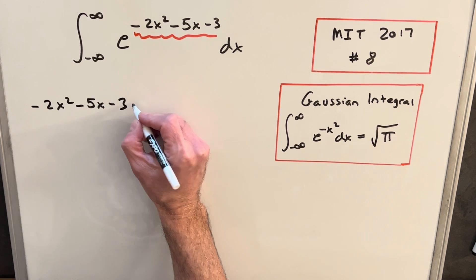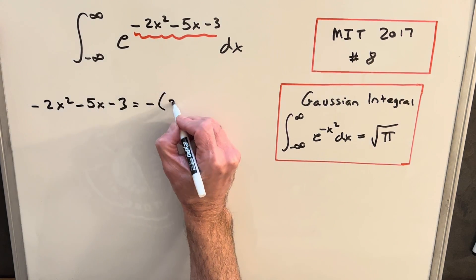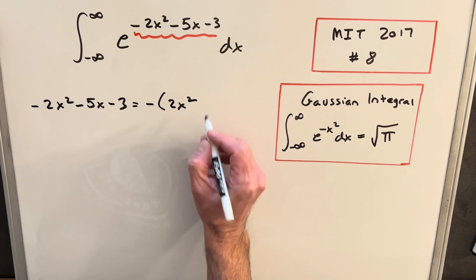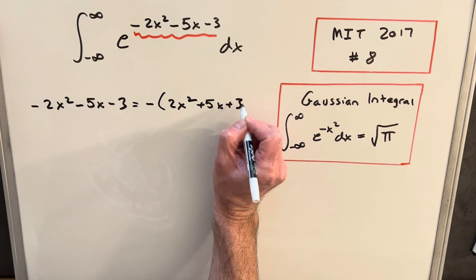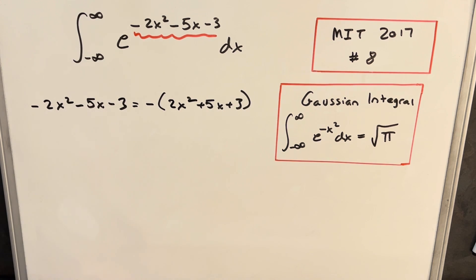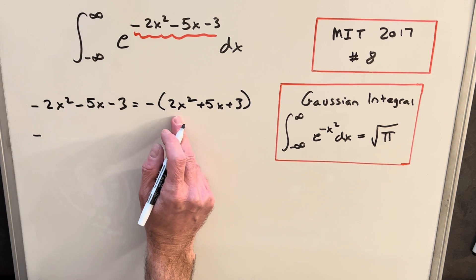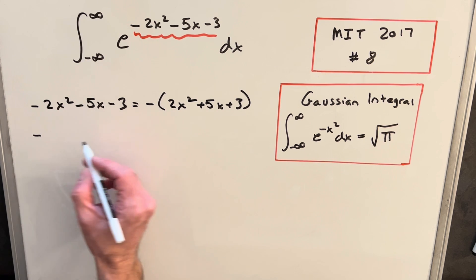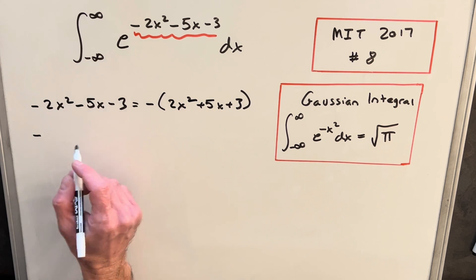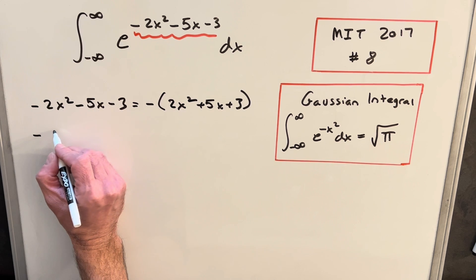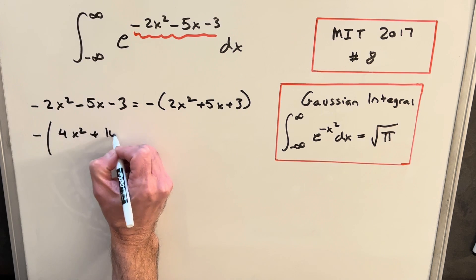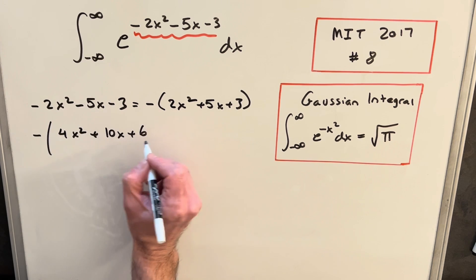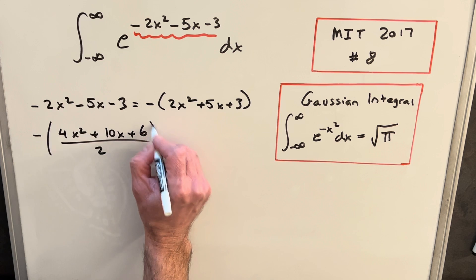So what I'm going to do first is we'll just factor a minus out of it so that we have it all positive. So we'll have 2x squared plus 5x plus 3. And we want to set this up so we can complete the square. We need that square term in this thing. So what I'm going to do, and the way I like to do this, I'm going to multiply this by 2 and then divide by 2. So doing that, we're going to rewrite this as 4x squared, I'm multiplying every term by 2, 10x plus 6 over 2.